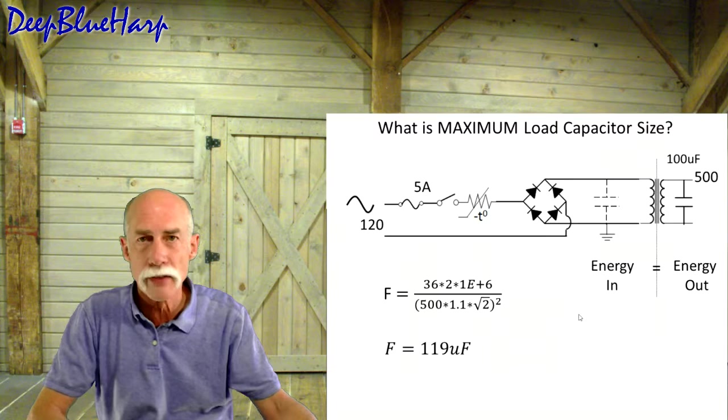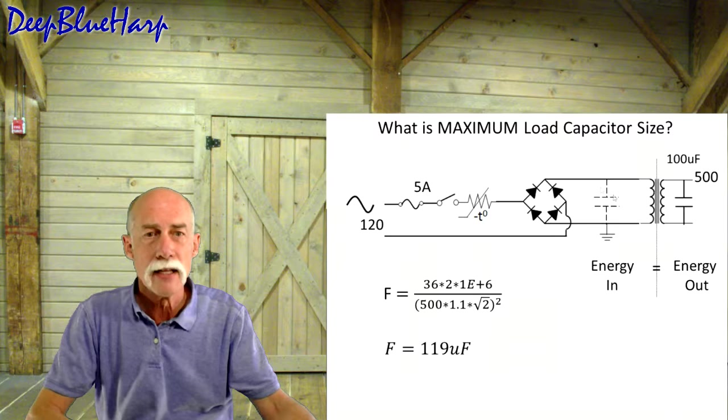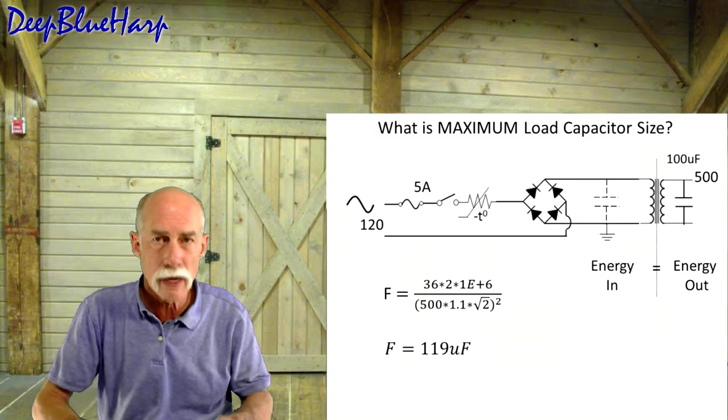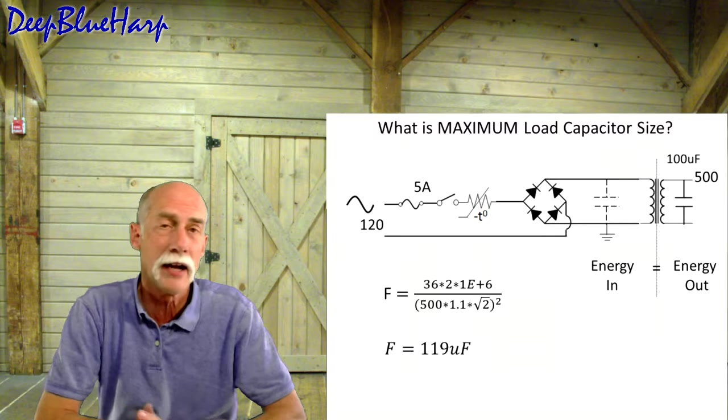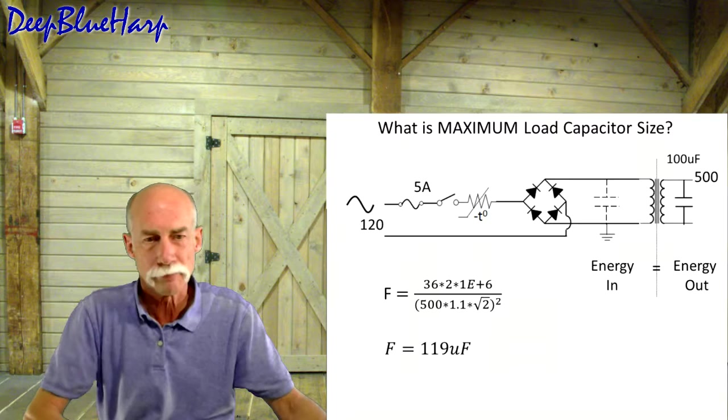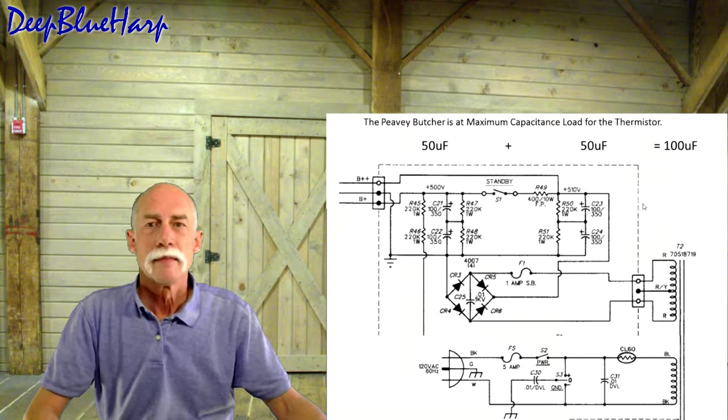So, I placed in 36 joules. That's all we're allowed to dissipate for this thermistor. That means I calculate the total load between the filter and reservoir cap can only be 119 microfarads. You can put in another 19 microfarads, but it doesn't buy you anything. That's an odd sized capacitor.